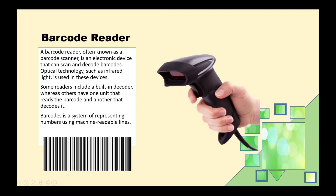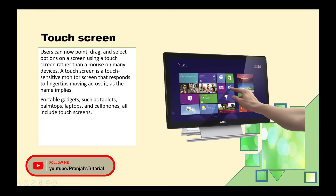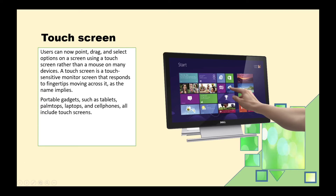The next input device is the touchscreen. The touchscreen is a sensitive monitor screen that responds to fingertip movement. We can move and tap this screen to interact with it. Using fingertip movement, we can send instructions to the computer system — such as pointing to objects, dragging, and selecting options. This device can replace a mouse and similar devices. Touchscreens are found in portable gadgets such as tablets, laptops, and cell phones.